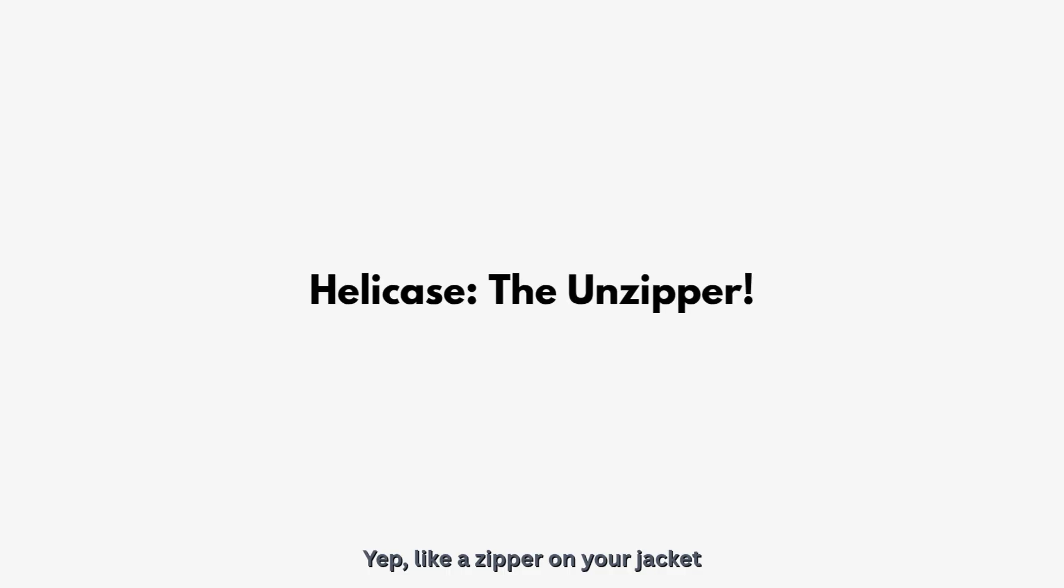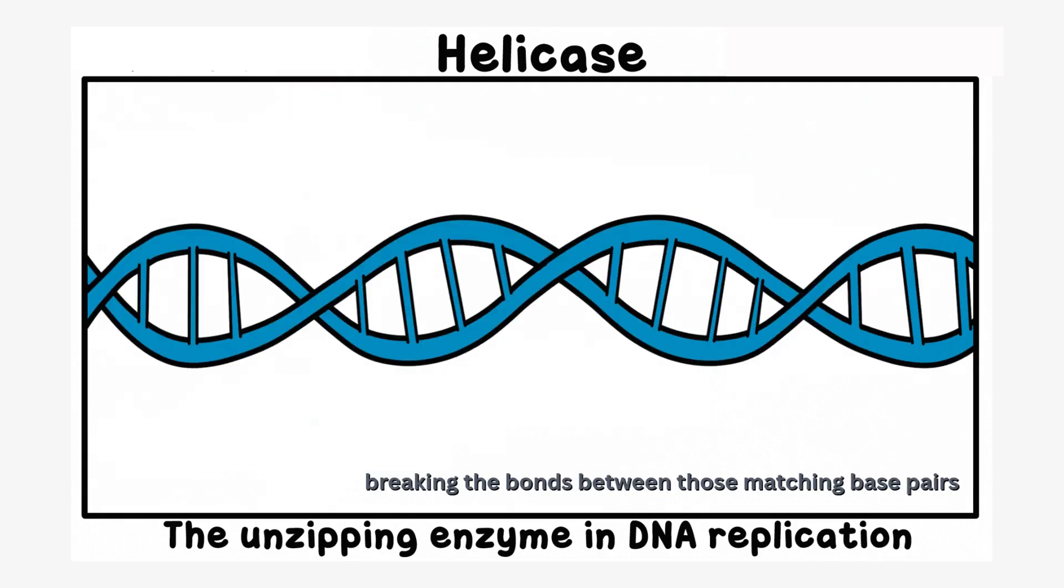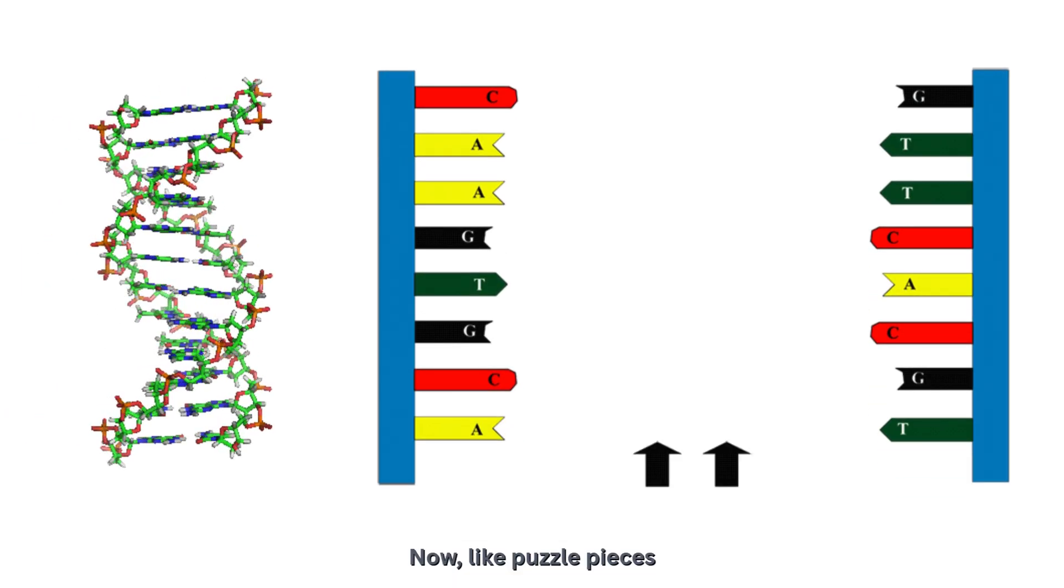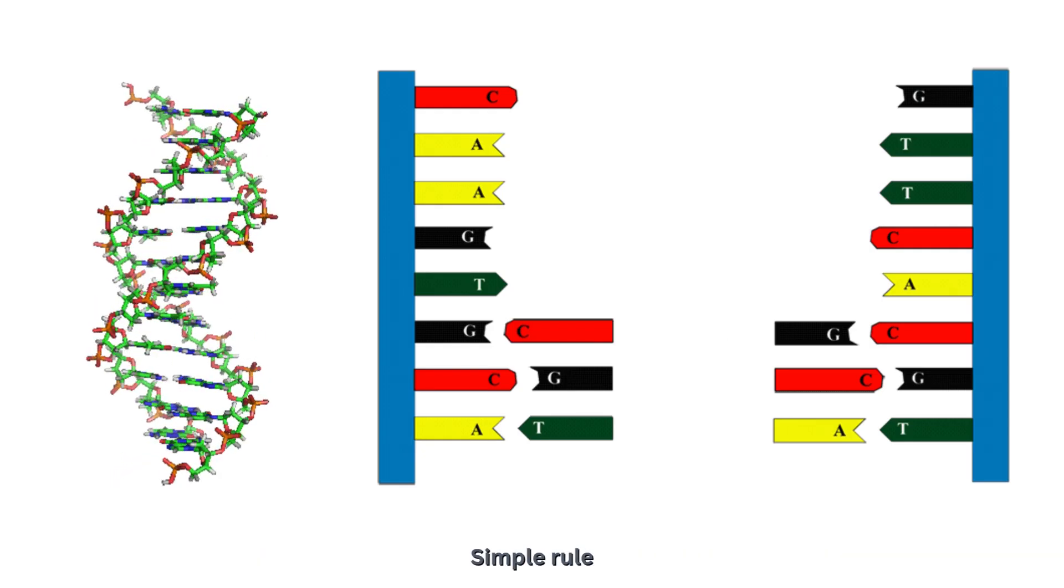Yep, like a zipper on your jacket. Meet helicase, the enzyme superhero that unzips your DNA, breaking the bonds between those matching base pairs. Now, like puzzle pieces, free floating bases in your cell start snapping onto the open strands.